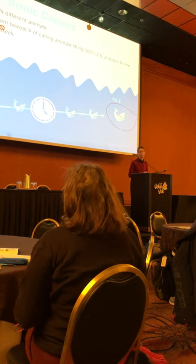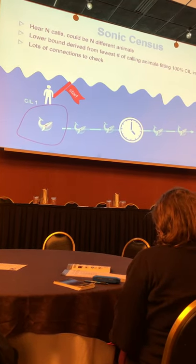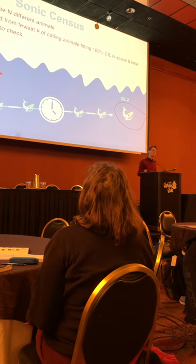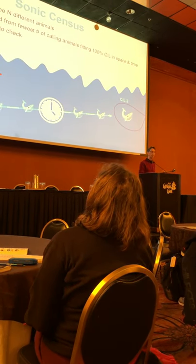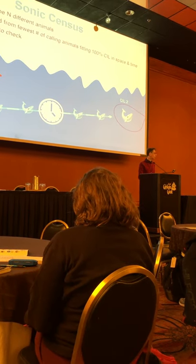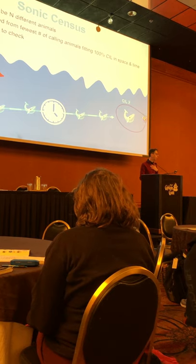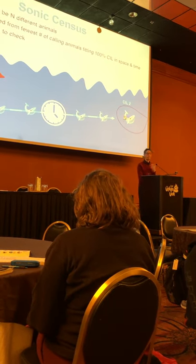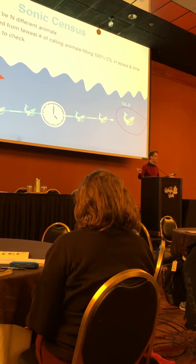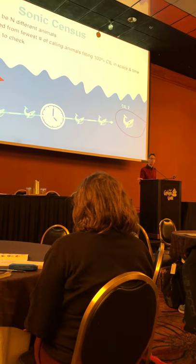Now let's figure out how to count the number of animals you heard. If you hear N calls, you could have heard as many as N animals — that's always the upper bound. The question is what's the lower bound: what's the fewest number that could explain what you heard? To solve that problem you need a reliable confidence interval for location. If the first call has a 100% confidence interval and the second call has one too, and you know they occurred some time apart — say a minute — then if the animal can swim from one interval to the other in that minute, it could be one animal or two. But if the intervals are too far apart, you know you heard two animals. None of this makes sense without an extremely reliable confidence interval, but that now exists.